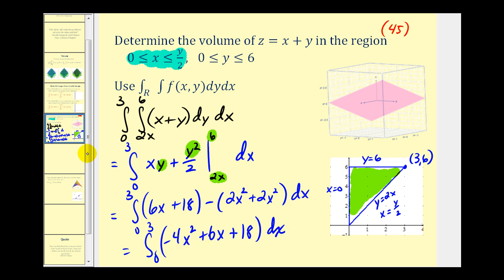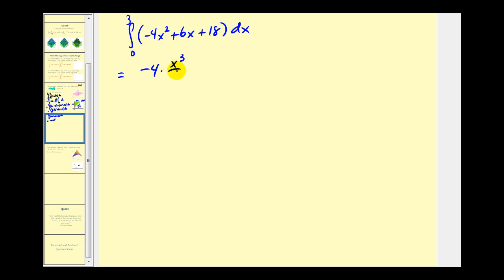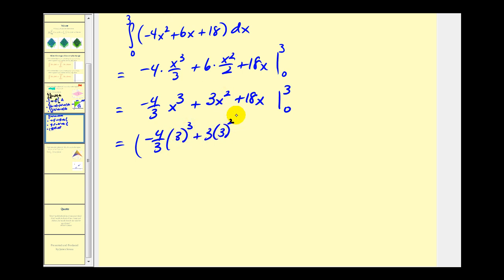Let's combine our like terms and integrate with respect to x. We'll have negative 4x squared plus 6x plus 18. Let's complete this on the next slide. We'll have negative 4 thirds x cubed plus 3x squared plus 18x, evaluated at 3 and 0. Replacing x with 3 we'll have negative 4 thirds times 3 to the third plus 3 times 3 squared plus 18 times 3, minus zero when x is 0.